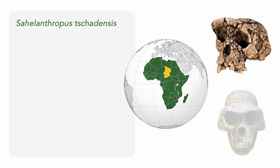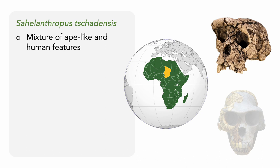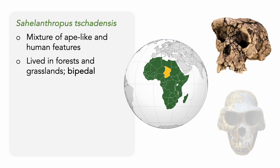Sahelanthropus tchadensis, discovered in central Africa in 2001, is perhaps the oldest species in the human lineage, with a mixture of ape-like and human traits. Like other apes, S. tchadensis had a relatively small brain, sloping face, and prominent brow ridge, but like humans, also had relatively small canine teeth and a few other skeletal modifications. Scientists believe it lived in forests and grasslands, and there is evidence that it was bipedal. The evidence is based on the repositioning of the foramen magnum — the hole in the back of the head where the spinal cord comes out — which was moved so that the spinal cord exits at the base of the skull instead of out the back.